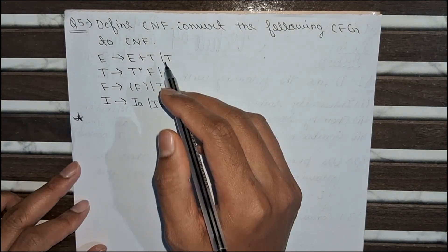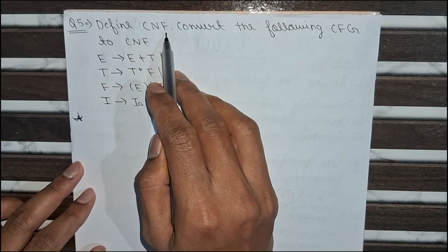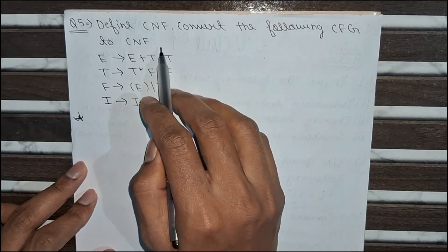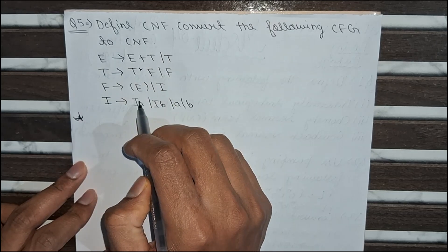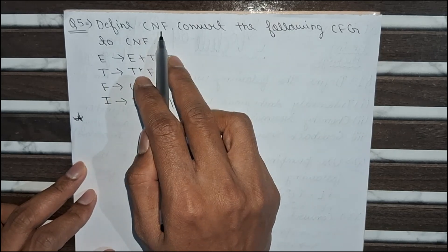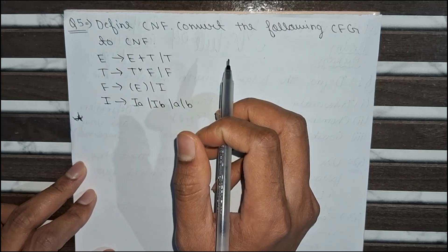Now our last question is, we have to define Chomsky Normal Form and we have to convert the following context free grammar to Chomsky Normal Form. Here a grammar is given, we have to convert it to CNF and we have to define the CNF properly here. Then we will get the full marks.